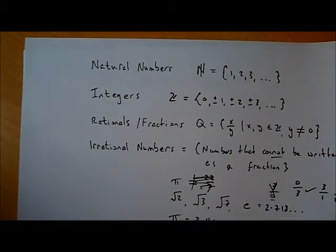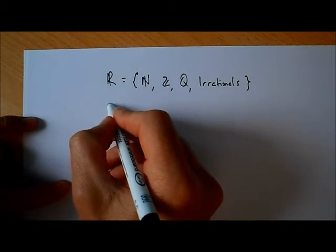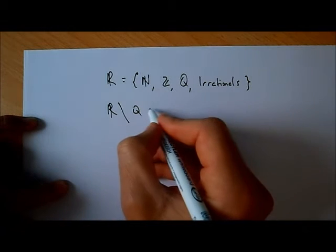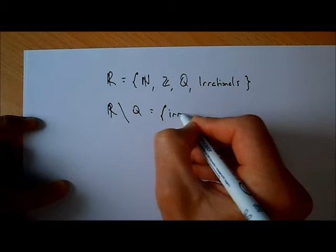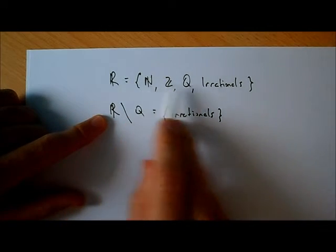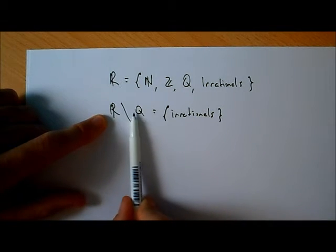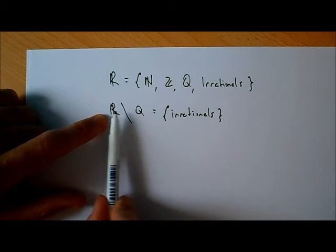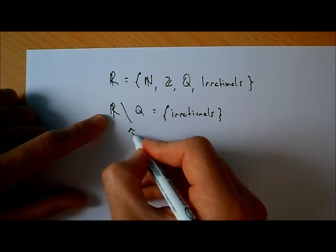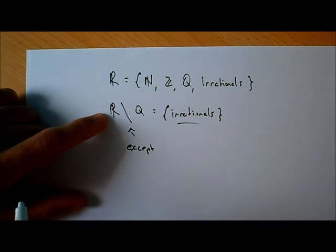One thing not yet mentioned was the symbol for irrational numbers. The natural numbers have symbol N, the integers have symbol Z, and rationals have symbol Q. For irrational numbers, we write R with a backslash Q — meaning R less Q. An irrational number is a real number that cannot be written as a fraction, so the real numbers except fractions are all irrational numbers.